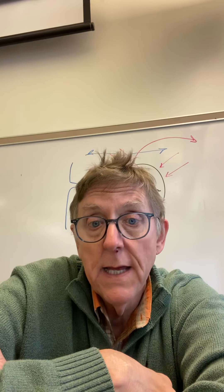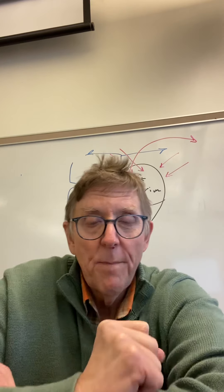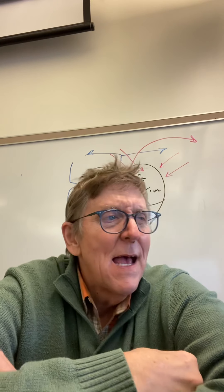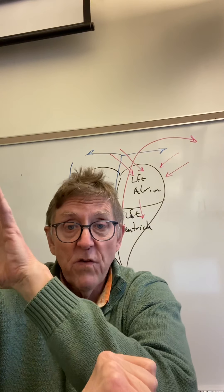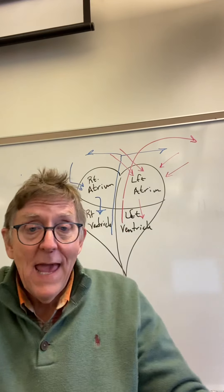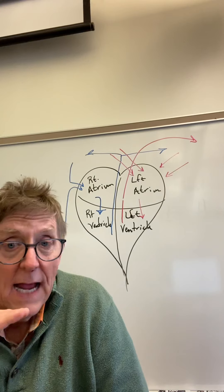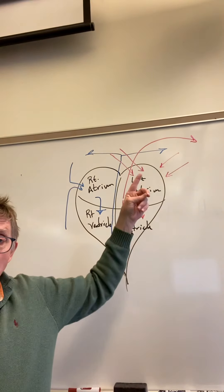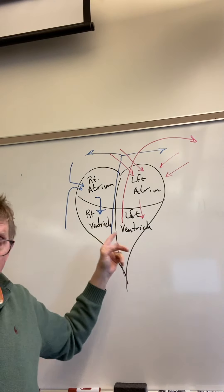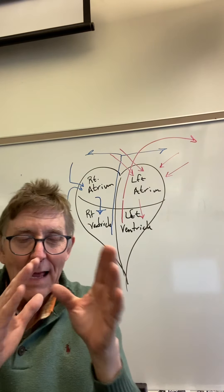Myogenic means the contraction is generated by the heart muscle itself. There is a location in the right atrium where the heartbeat is generated, and it starts the contraction that spreads across the top of the heart. We have a connective tissue separation between the two atria and the two ventricles — a connective tissue layer that isolates the two groups of cardiac muscle.